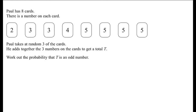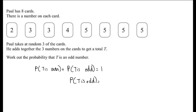Moving on to our next question. Paul has eight cards, each of which is numbered. Paul takes three of them at random and adds the numbers on the cards to get a total t. Work out the probability that t is odd. We know we can either get an odd number or an even number. Therefore, the probability that t is even plus the probability that t is odd must equal 1. Rearranging gives us that the probability that t is odd equals 1 minus the probability that t is even. So if we figure out the probability that t is even, we can use this to find the probability that t is odd.